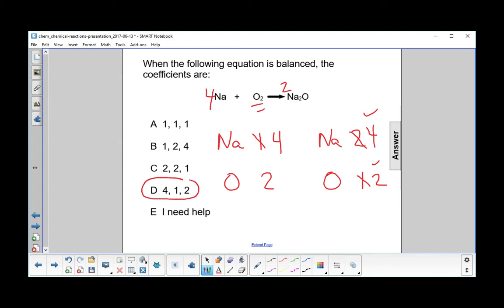So four goes in front of the sodium, one goes in front of the O2, and two goes in front of the sodium oxide. So D is the answer.